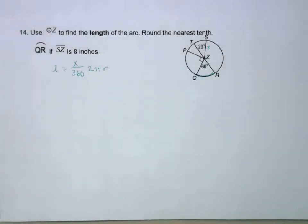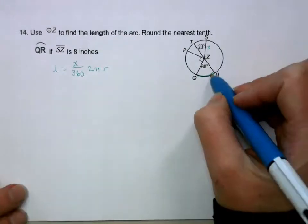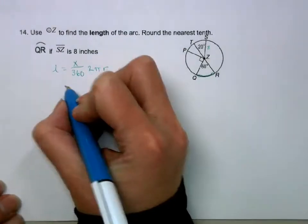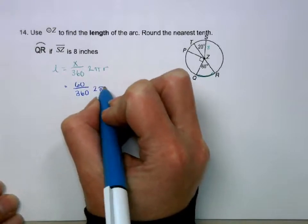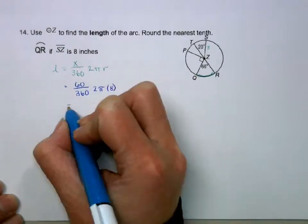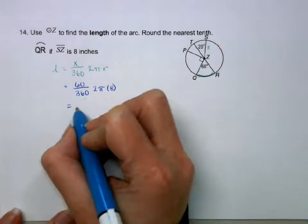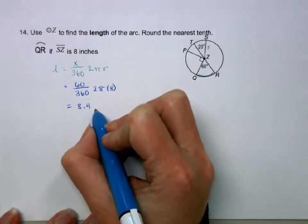So for this one, the central angle for QR is 60. Divide that by 360, multiplied by 2 pi times 8. So that's going to give me 8.4 inches.